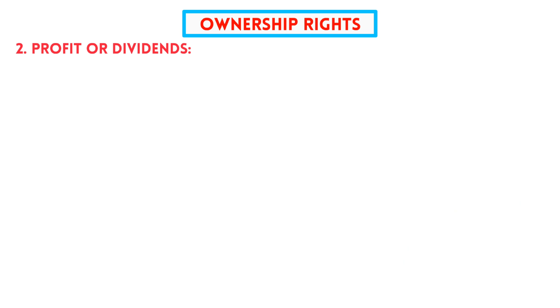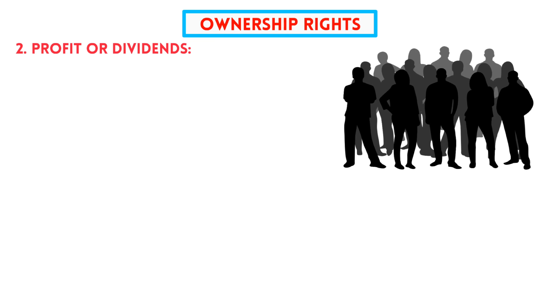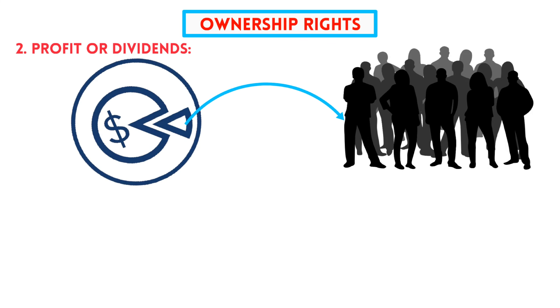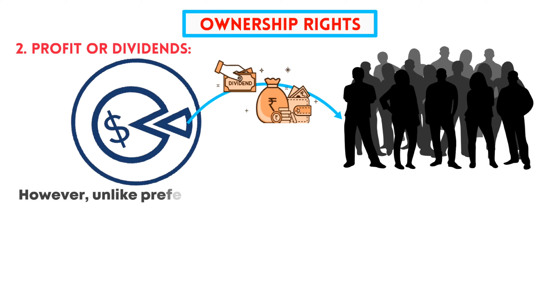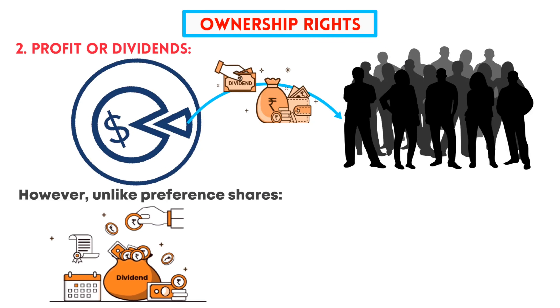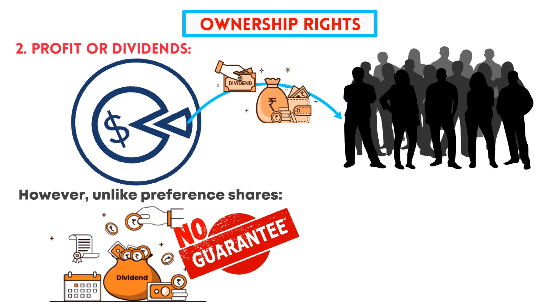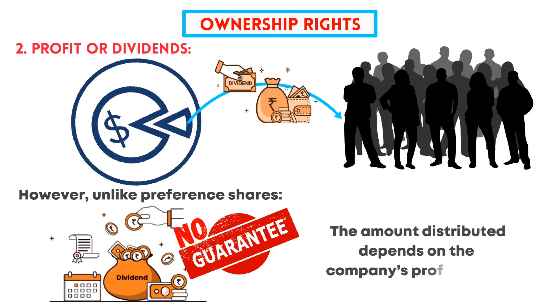Second, profits or dividends: ordinary shareholders may receive a portion of the company's profits in the form of dividends. However, unlike preference shares, dividends for ordinary shares are not guaranteed. The company's board of directors decides whether or not to distribute dividends, and the amount depends on the company's profitability.